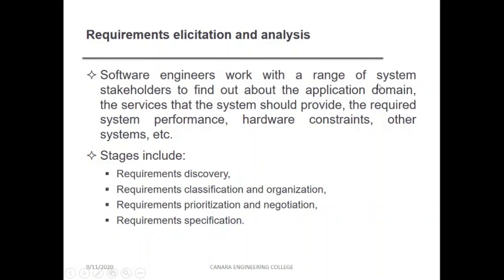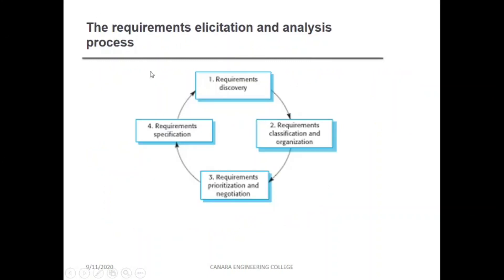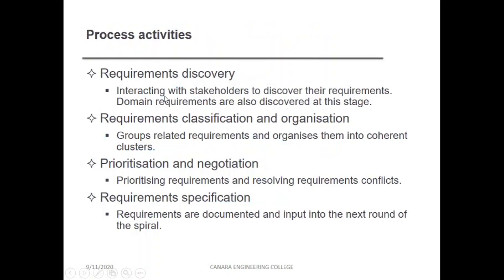Software engineers work with a range of stakeholders to find out about the application domain, the services the system should provide, required performance, and hardware constraints. The stages of requirement elicitation and analysis are: requirement discovery, classification and organization, prioritization and negotiation, and requirement specification — forming a circular process.